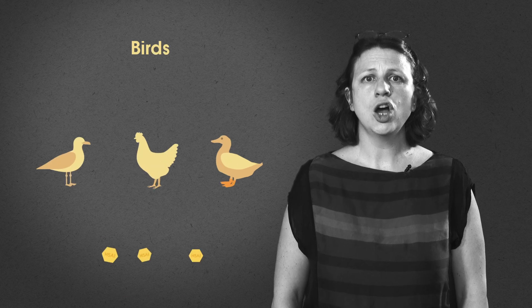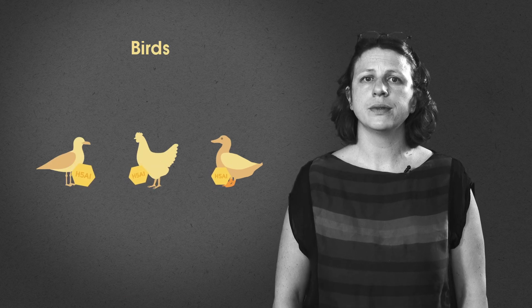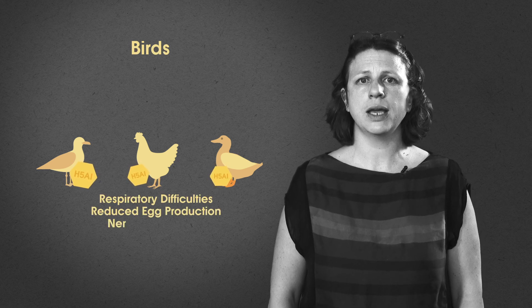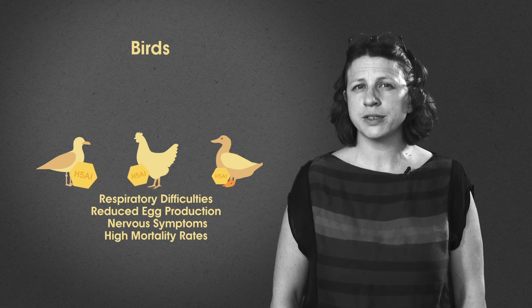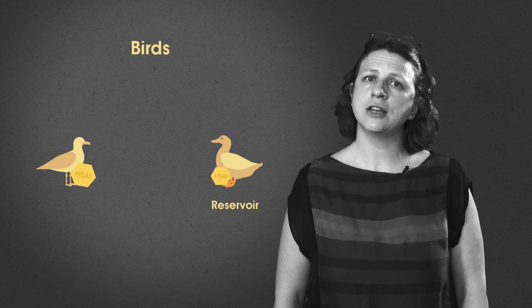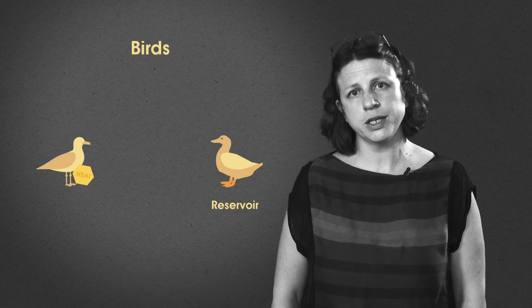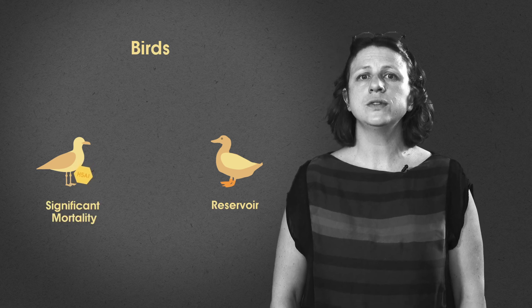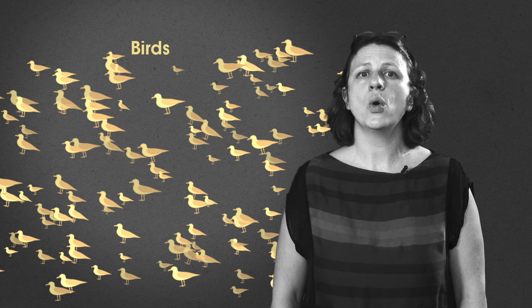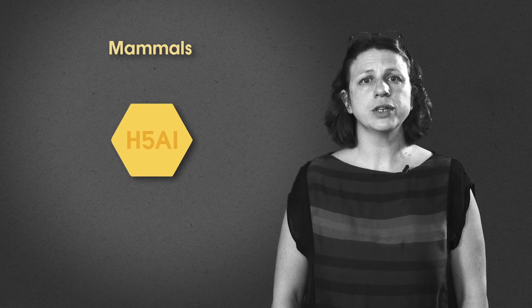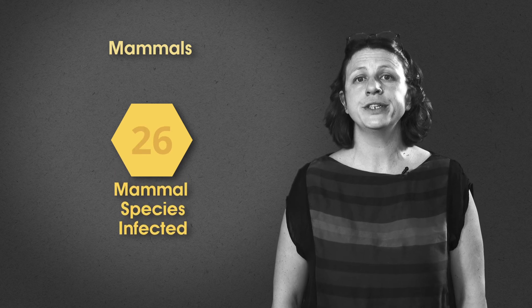Birds, both domestic and wild, are primarily affected by avian influenza. Domestic chickens often exhibit respiratory difficulties, reduced egg production, nervous symptoms, and high mortality rates. Initially, ducks acted as a reservoir without showing symptoms. However, recent strains of the H5 virus, particularly those that emerged in 2020, have led to significant mortality in wild birds. These strains have also spread to seabird colonies where dense populations gather, resulting in thousands of deaths. Various mammals can contract the virus by ingesting infected birds, leading to infections in at least 26 mammal species so far.